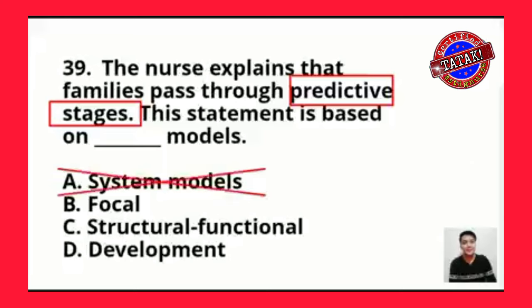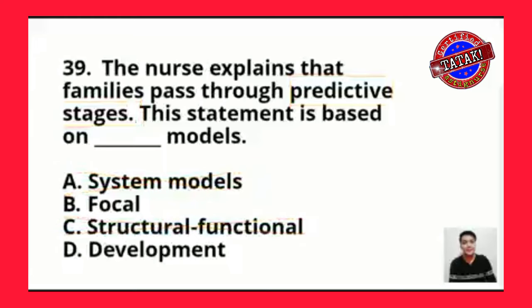For letter C, the structural functional model views the family as an open social system. The keyword there is open social system and as a subsystem within society. So letter C, structural functional model, is also incorrect.